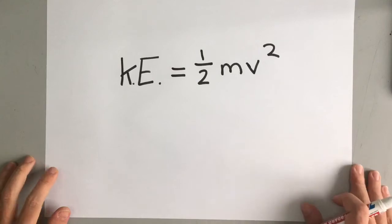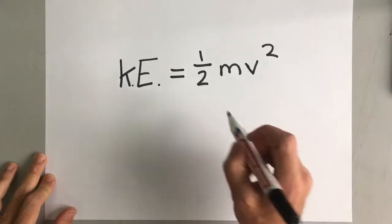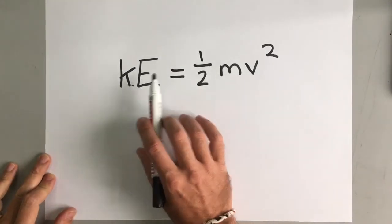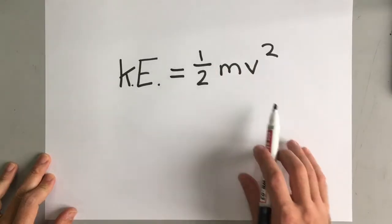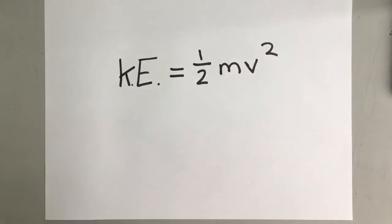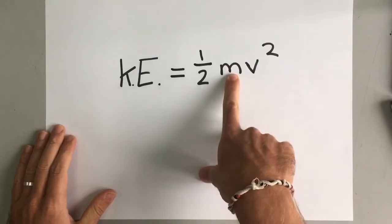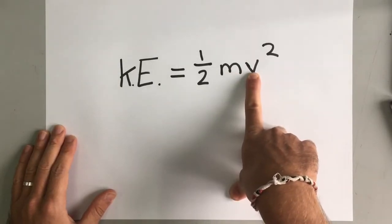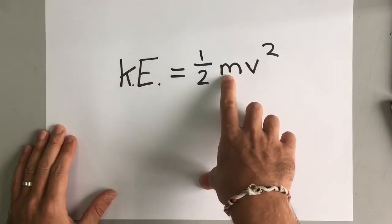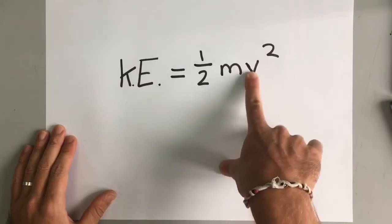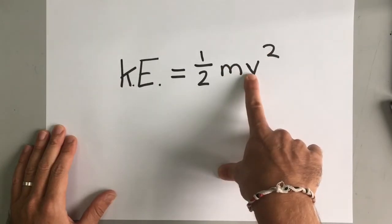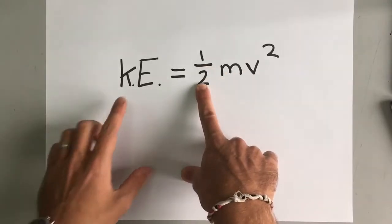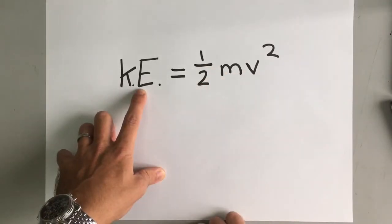It's also one of the only formulas at GCSE where you don't just have something equals something times something. This one's a little bit different. So make sure that you remember that. For example, if we have a one kilogram object traveling at two meters per second, then that has one times two squared, which is four. So one times four is four. Halved is two. It has two joules of kinetic energy.